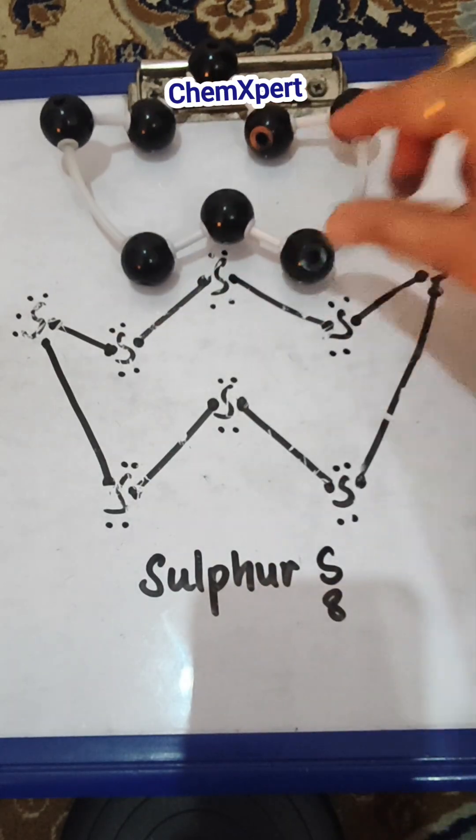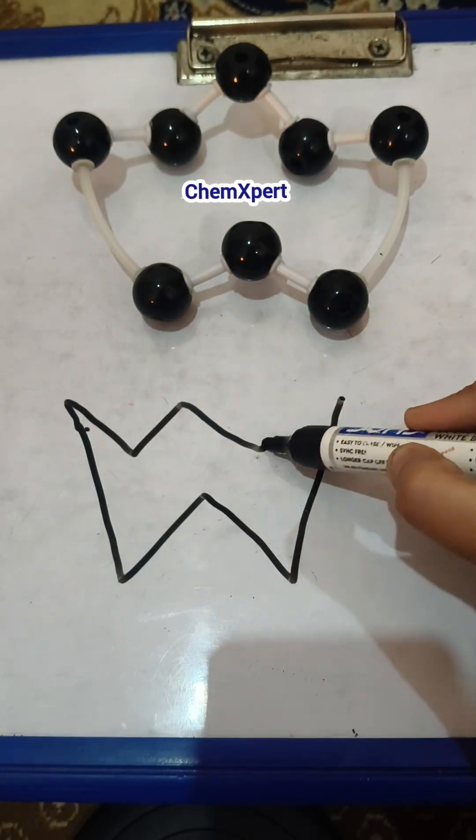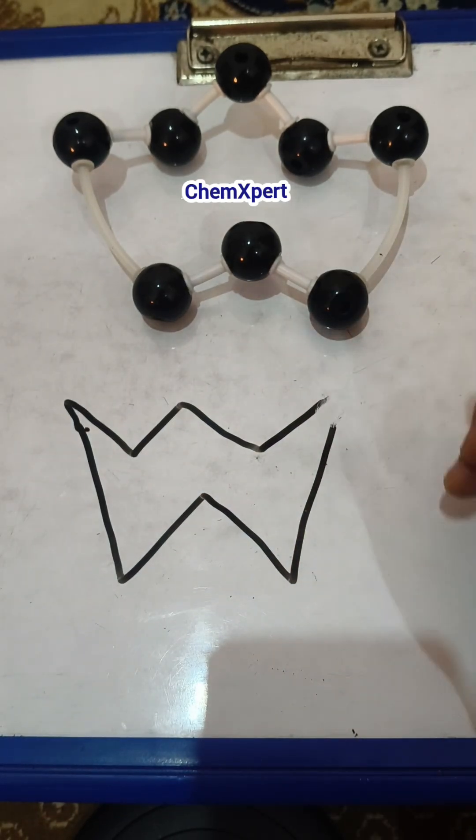Now, let's draw the electron dot structure of this S8. So, first of all, draw a double W here, then at each corner of the structure you have to write sulfur.